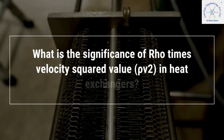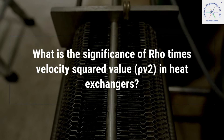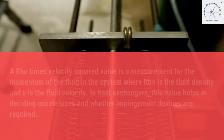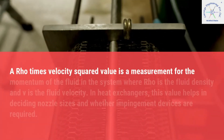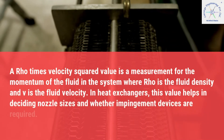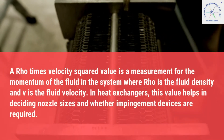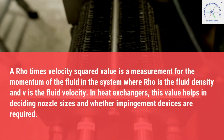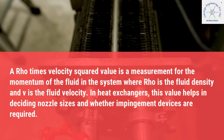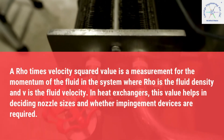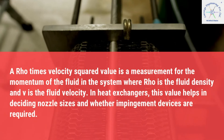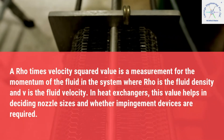What is the significance of the rho times velocity squared value in heat exchangers? A rho×V² value is a measurement of the momentum of the fluid in the system, where rho is the fluid density and V is the fluid velocity. In heat exchangers, this value helps in deciding nozzle sizes and whether impingement devices are required.